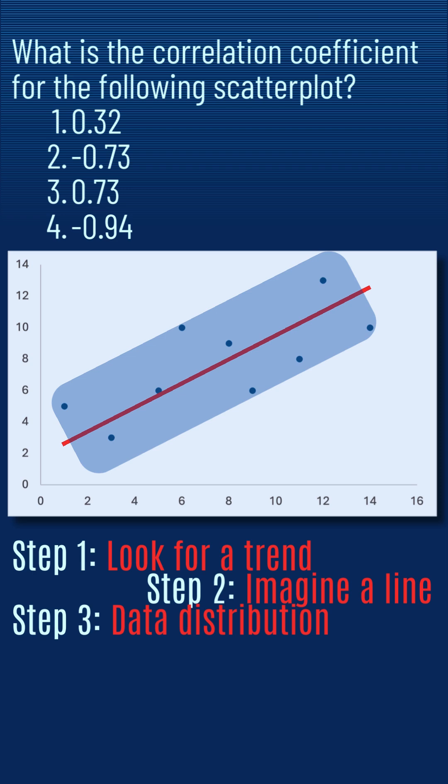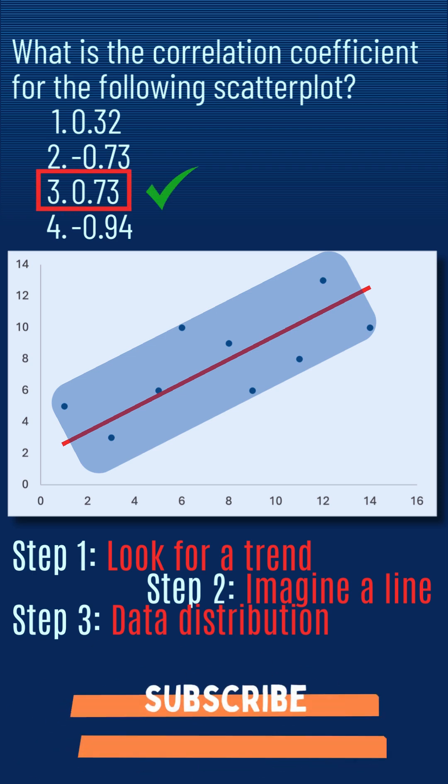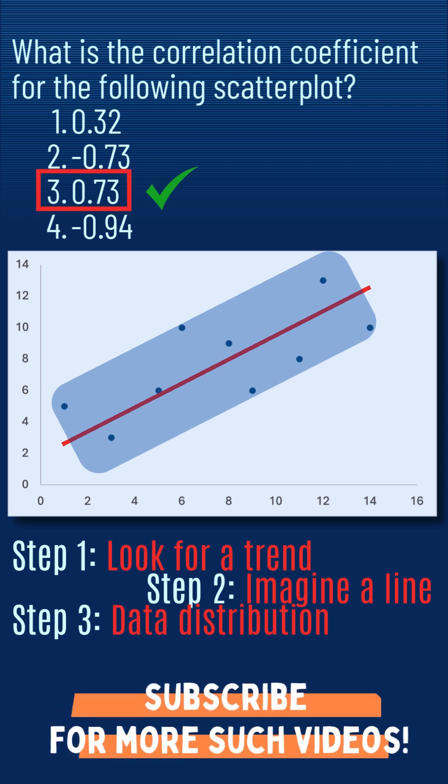In this case, the upward trend suggests a positive correlation, and the tighter clustering indicates a strong correlation. This means the correlation coefficient for the scatterplot will be 0.73.